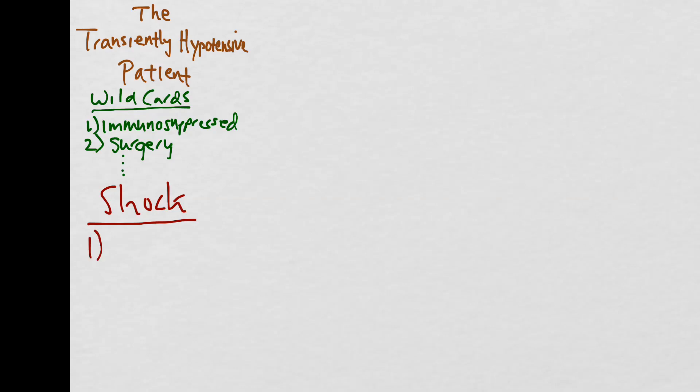The first type of shock that we'll talk about will be cardiogenic shock. Maybe your patient is presenting with new-onset heart failure secondary to an atypical MI, or maybe the patient had a recent URI and is now presenting with myocarditis.